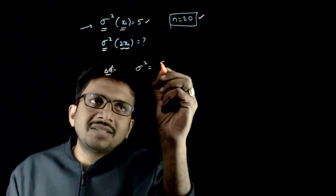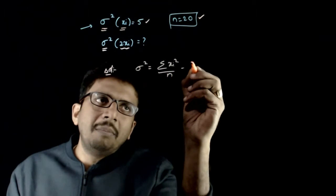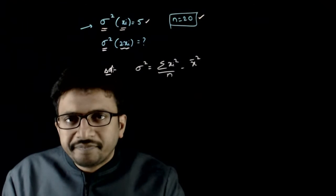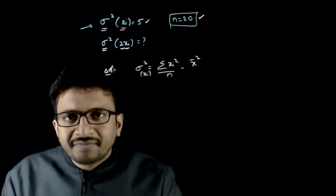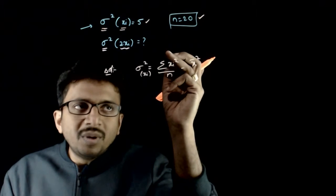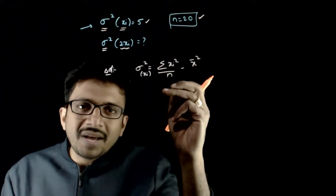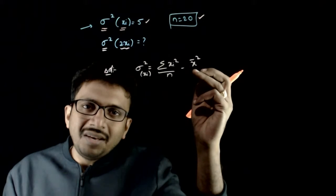Formula is nothing but sigma xi square by n minus x bar square. This is the variance of xi. If the observations are xi, you just need to sum the squares of xi by n minus the mean square.